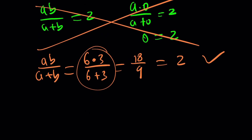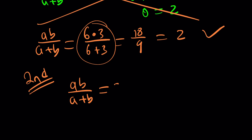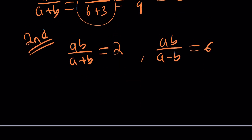Ready? Here's the second method. Let's rewrite the system: ab over a plus b equals 2, and ab over a minus b equals 6. We're going to flip this. This expression is not separable, but if I flip it, it'll be separable. If x equals y, then 1 over x equals 1 over y, provided x and y are not zero.